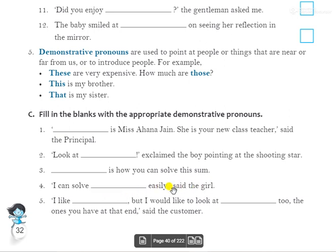Fifth: 'I like dash but I would like to look at dash too — the ones you have at the end,' said the customer. The nearby ones she likes, so 'these'; the ones at the end are far, so 'those'. Answer: 'I like these but I would like to look at those too.' — मुझे ये अच्छे लगे पर मैं वो भी देखना चाहता हूं।